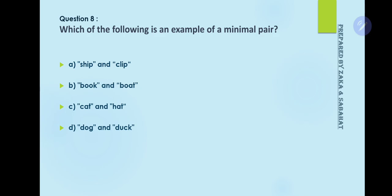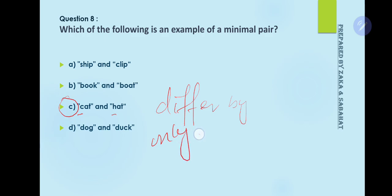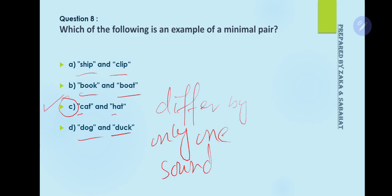Question number 8: Which one of the following is an example of a minimal pair? Option C is the correct answer. A minimal pair is a pair of words that differ by only one sound in the same position, and this difference results in a change of meaning. Here, 'cat' and 'hat' differ by only one sound — /k/ and /h/ — so this is a minimal pair. 'Dog' and 'duck', or 'book' and 'board', do not meet that criterion.